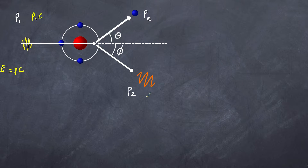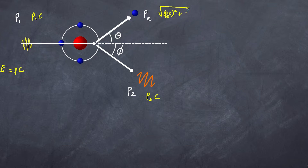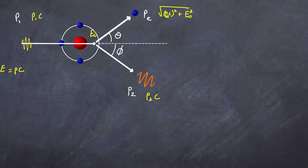That means our incoming photon energy is P1C, and our outgoing photon energy is P2C. The energy of the outgoing electron includes both kinetic energy and rest mass energy, so it equals the square root of (PeC) squared plus E-naught squared. We also have the rest energy of the electron before the collision, which we call E-naught. We'll come back to energy in a moment but first let's discuss conservation of momentum.